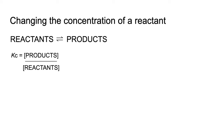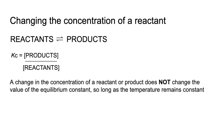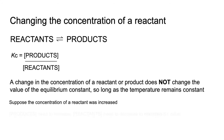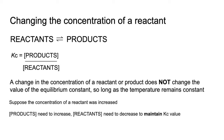Now let's consider the effect of changing concentration. The golden rule is that changing concentration alone — without changing temperature — does not change the equilibrium constant value. If the concentration of a reactant is increased, the denominator of the Kc expression increases, so Kc would decrease if the equilibrium didn't shift. Since Kc must stay the same, the equilibrium shifts right — lowering the reactant concentration and raising the product concentration.